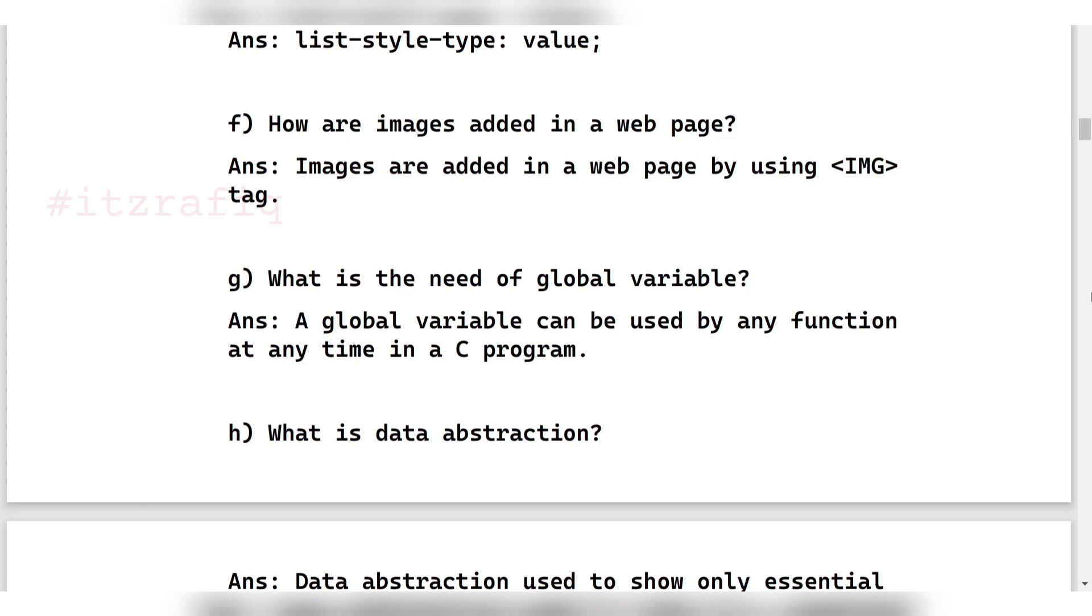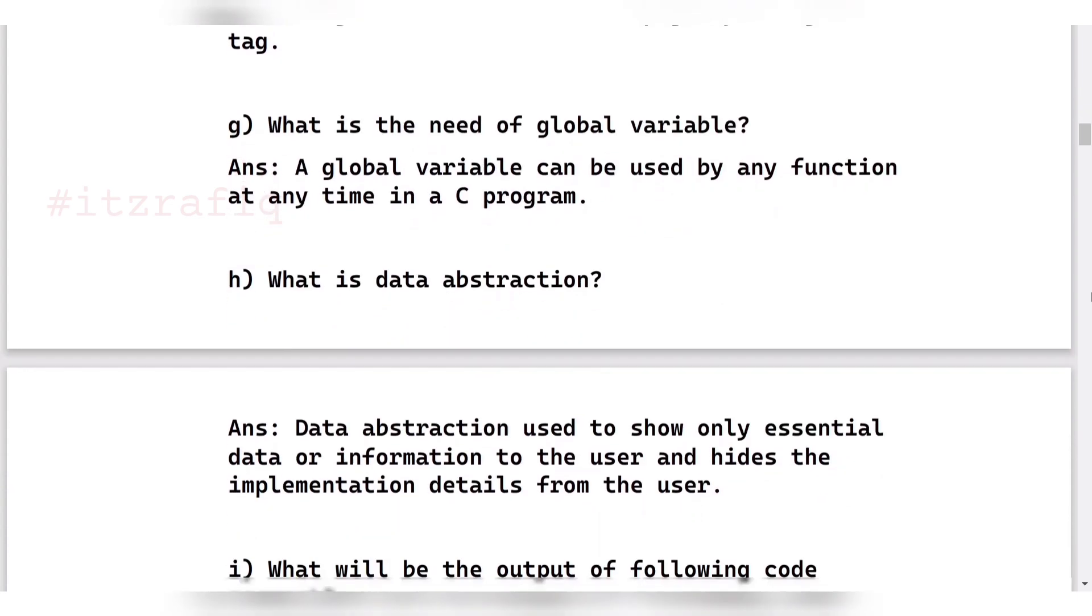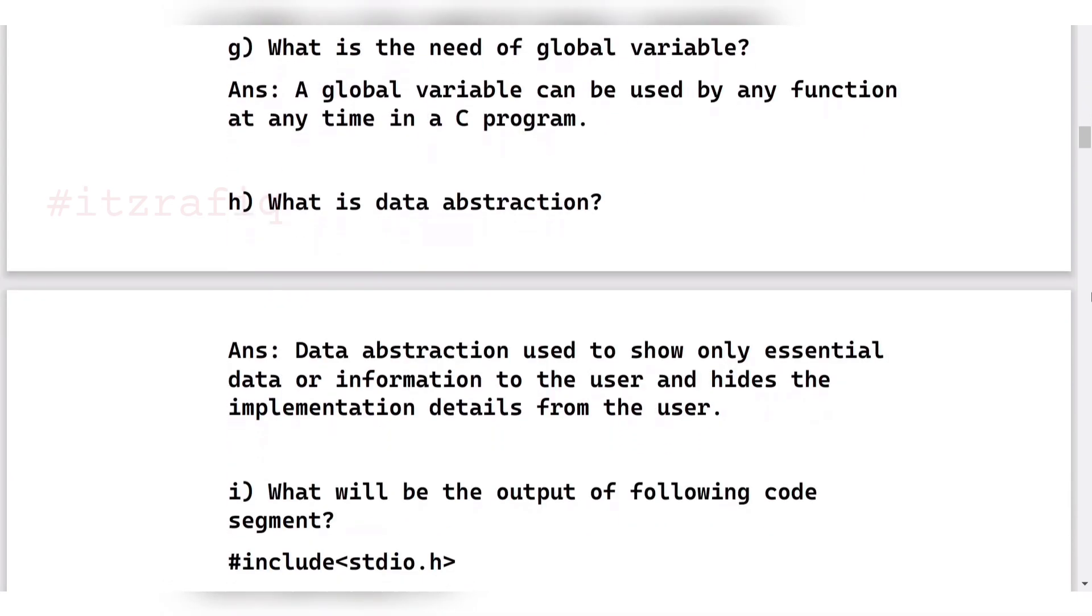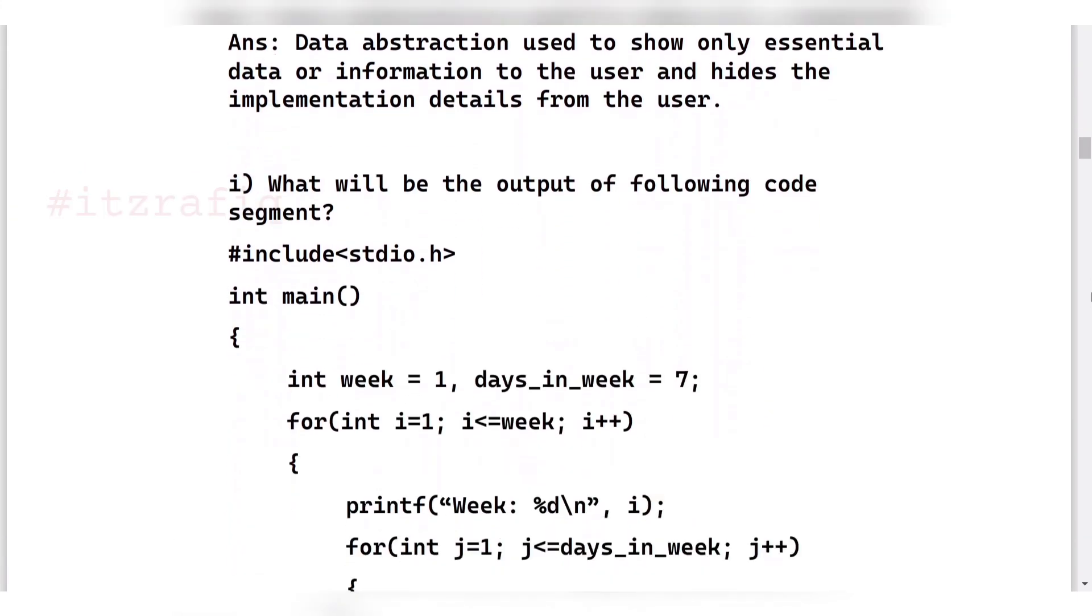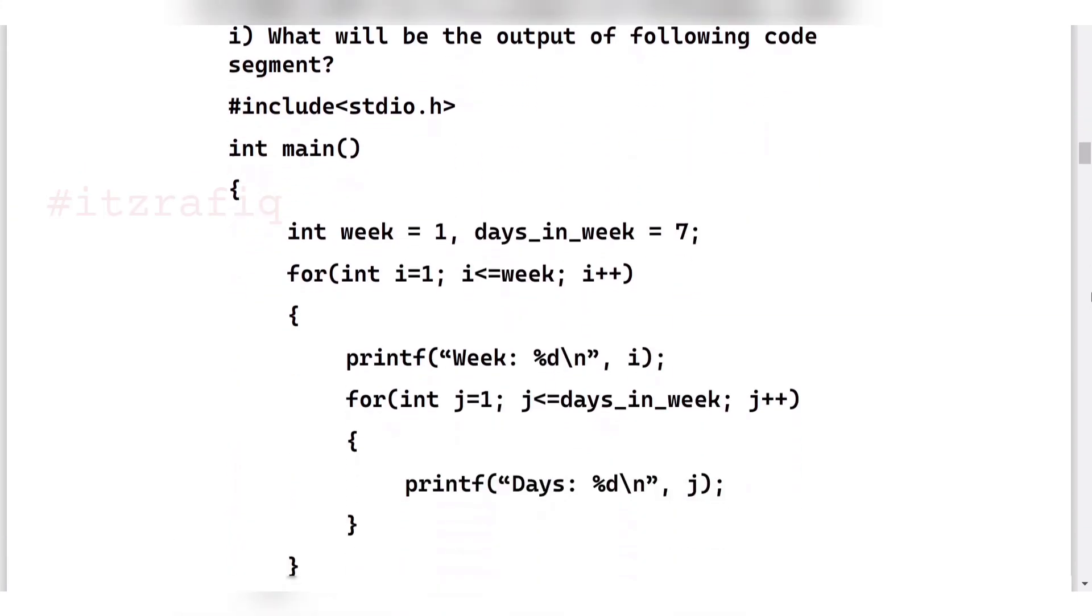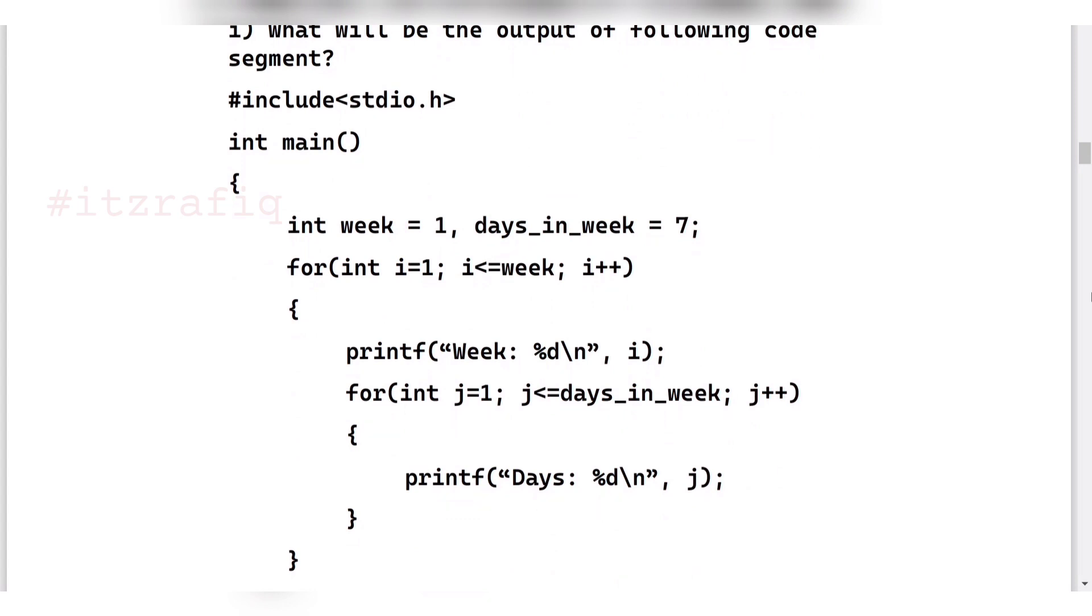Then data abstraction - this is from chapter 10. Data abstraction is used to show only the essential data or information to the user and hide the implementation details from the user. For example, suppose you are driving a car. While you are driving a car, you do not know how the engine works or how the car mechanism works. So this is an example of data abstraction.